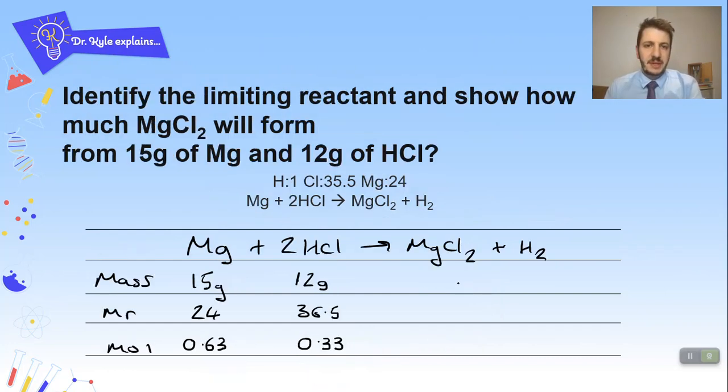Okay so identify the limiting reactant and show how much magnesium chloride will form from 15 grams of magnesium and 12 grams of HCl. So again write your equation out. Mass, MR, moles. 15 for your magnesium. 12 for your HCl. 24, 36.5. 15 divided by 24 gives me 0.63 moles and 12 divided by 36.5 gives me 0.3 moles.